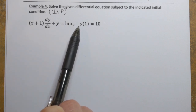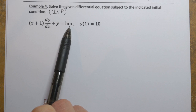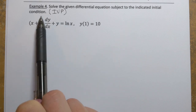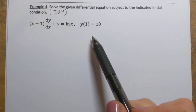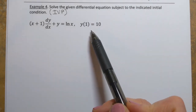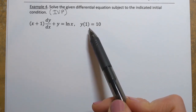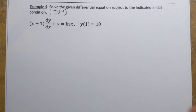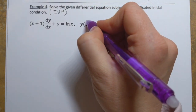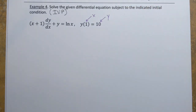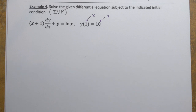Now, first what we're going to do is find the general solution. Remember that's the process for solving the IVP: first find the general solution, and then using the given condition, find the particular solution that satisfies that condition — one specific function such that when x equals 1, y equals 10. So let's perform the steps for solving the first order linear differential equation.